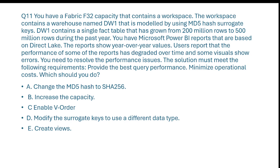Since enabling V-Order doesn't require additional compute resources, it also helps minimize operational cost — so enabling V-Order is the solution. Option D: modify the surrogate key to use a different data type. This is incorrect — changing the surrogate key may slightly optimize joins but won't significantly improve overall performance for large queries. Option E: create views. Views don't improve performance on their own in Direct Lake mode; query speed is mainly affected by storage efficiency, which V-Order improves. So the answer is: enable V-Order.